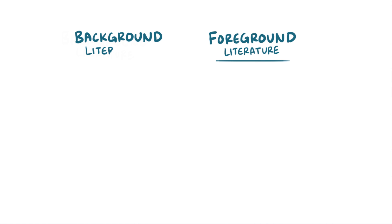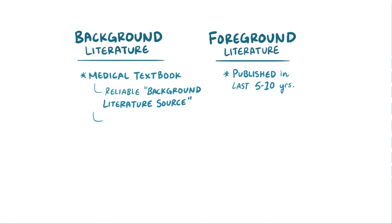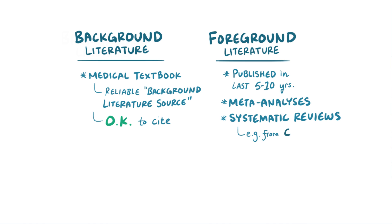One additional idea to consider is the concept of foreground vs. background literature. While it might be tempting to limit yourself to sources only published in the last 5-10 years, remember that certain things in health were discovered a long time ago. For example, the heart's been going lub-dub for centuries, so a medical textbook is a reliable background literature source, and that's perfectly okay to cite. In contrast, newer domains of health-related sciences will require foreground literature, like meta-analyses or systematic reviews like those from the Cochrane database.